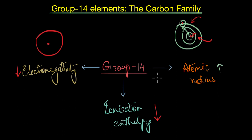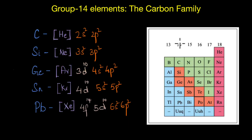These are the general trends and expectations, but in group 14 we will observe that the trends are not exactly like this — there are some variations. The members of the carbon family are carbon, silicon, germanium, tin, and lead. Carbon is a non-metal, silicon and germanium are metalloids, while tin and lead are completely metallic in nature.